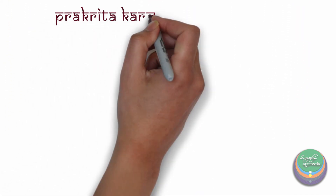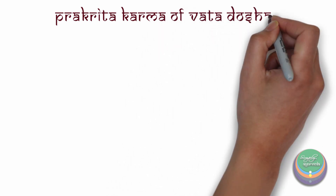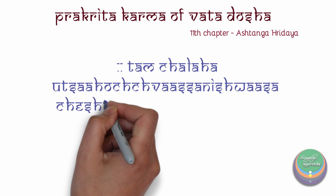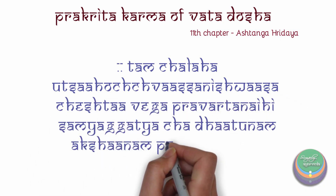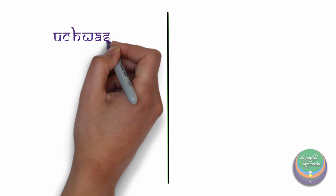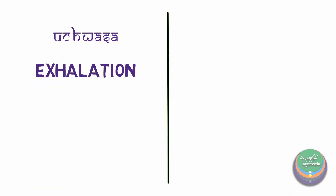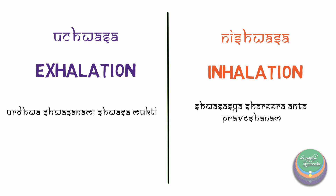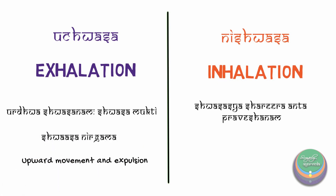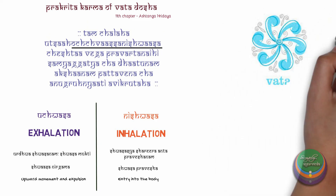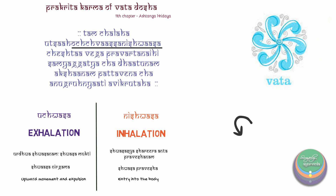In the Dosadhi Vijnana chapter of Ashtanga Hridaya, the following has been mentioned as the Prakrita Karma of Vata-Dosha. We are going to focus on two of the functions of Vata-Dosha in this video. Uchvasa is Urda-Shvasanam, Shvasamukti, and Nishvasa is Shvasasya Shadira Antapraveshanam according to Acharya Arunadutta. Acharya Hemadri has also given similar explanations: Shvasa Nirgama and Shvasapravesha. Hence, we can conclude that non-vitiated Vata is responsible for exhalation and inhalation in the body.